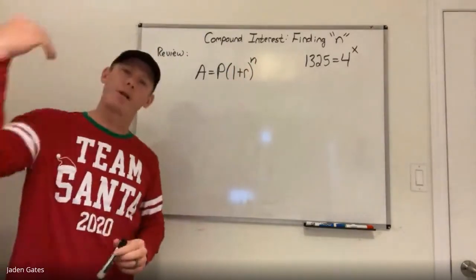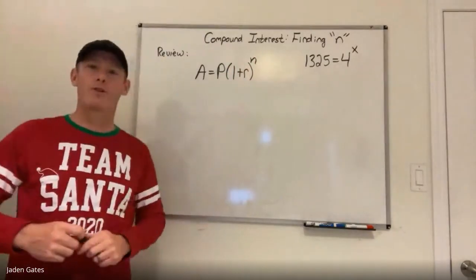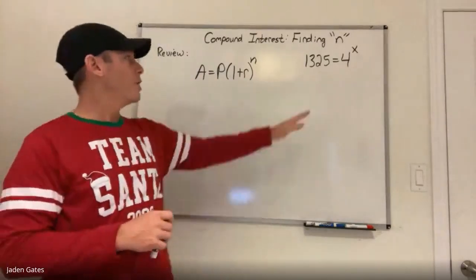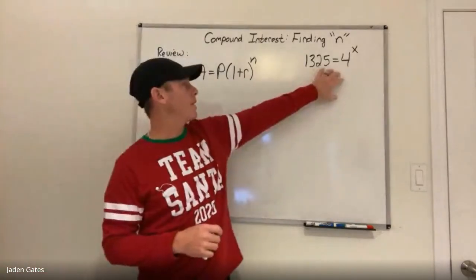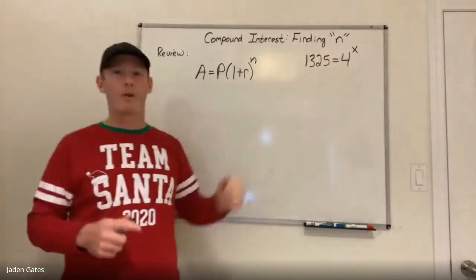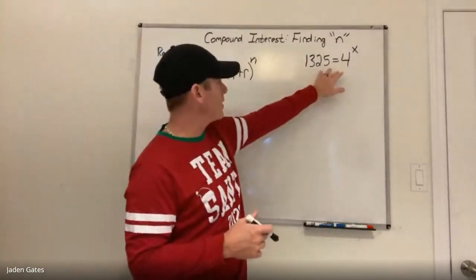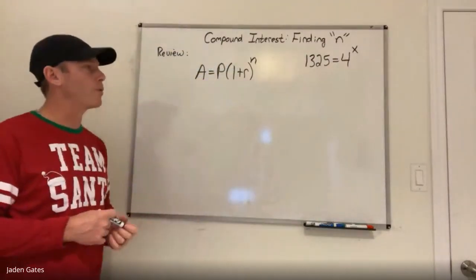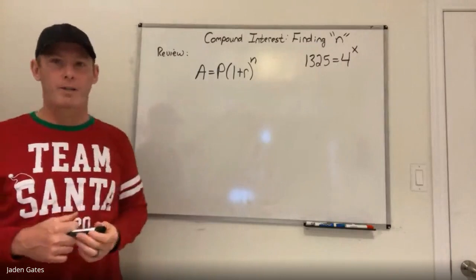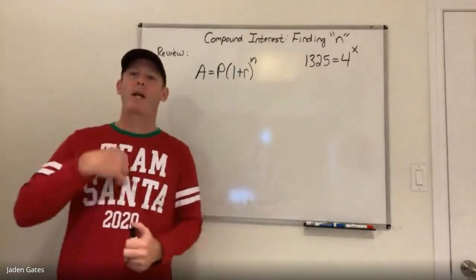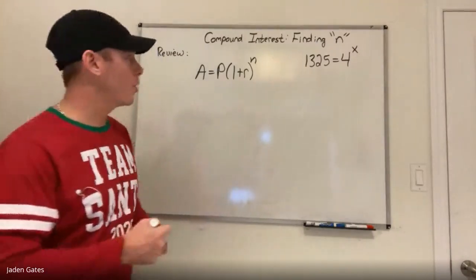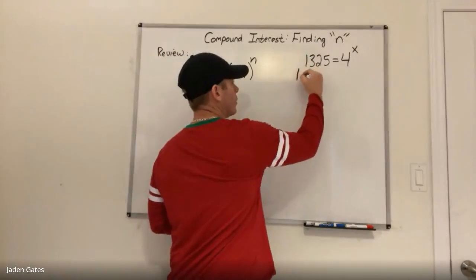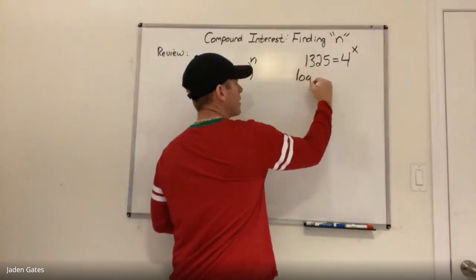Because n is an exponent, this comes back to our last unit on solving exponential equations. As a little review: if I have 1325 = 4^x and I want to solve for x, what we did last unit was take the log of both sides.